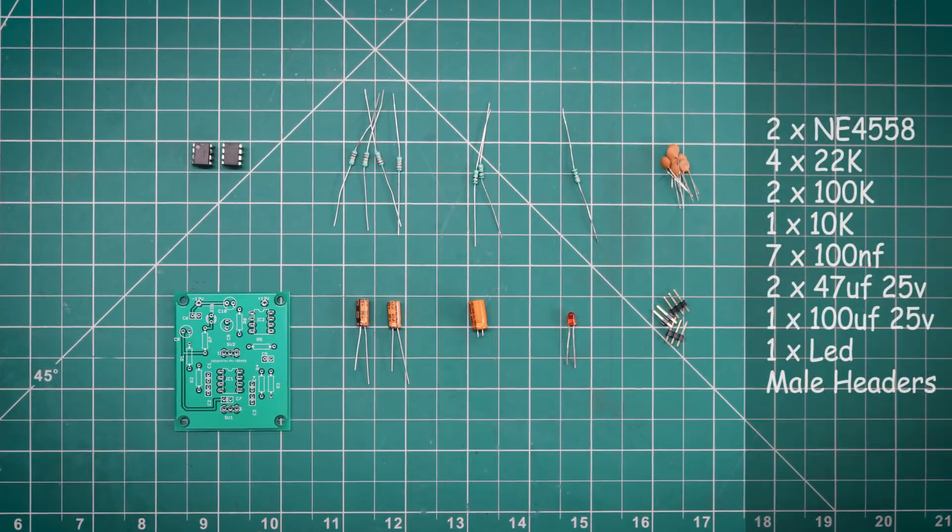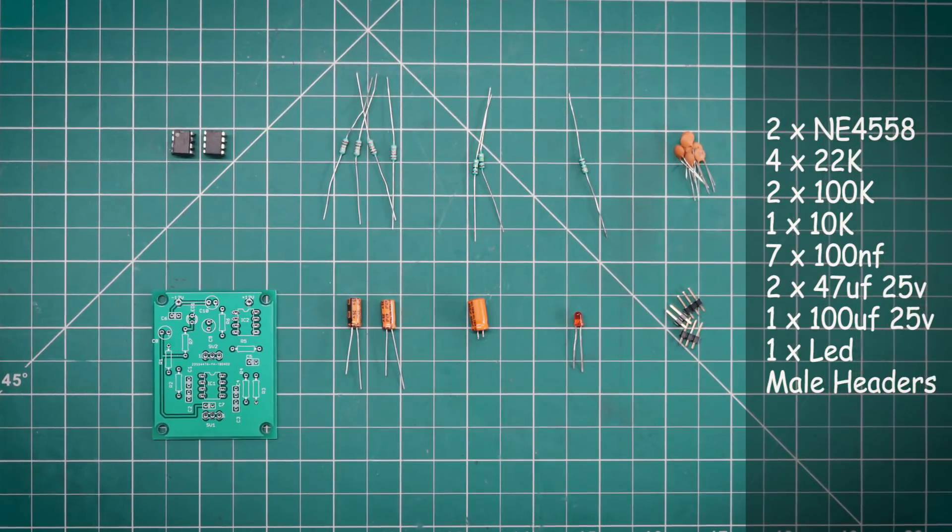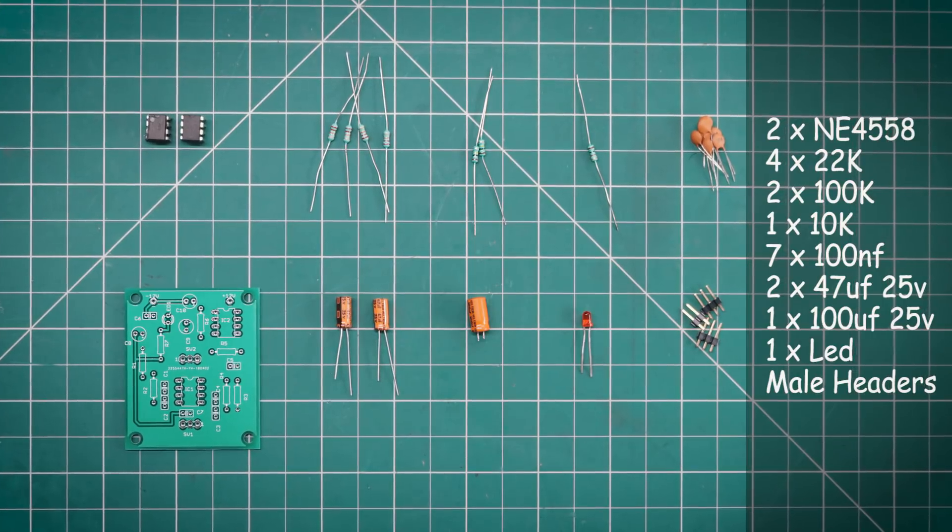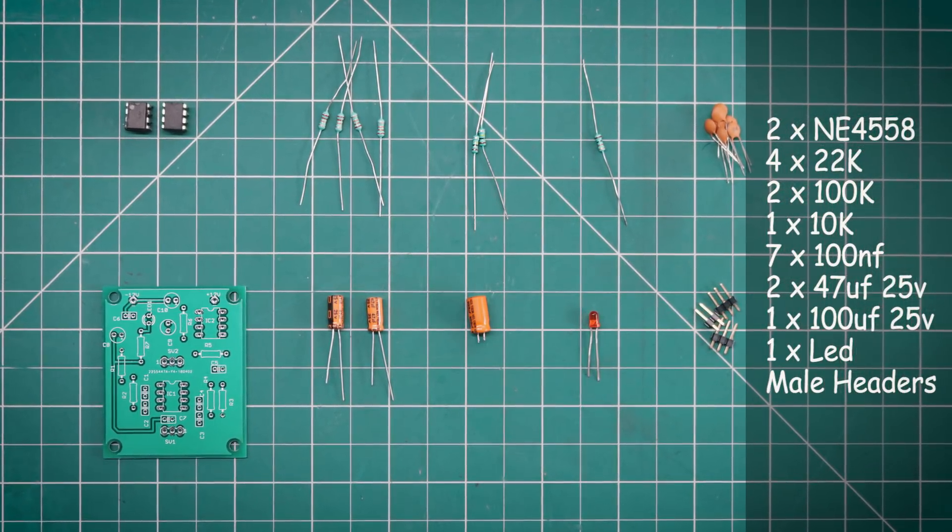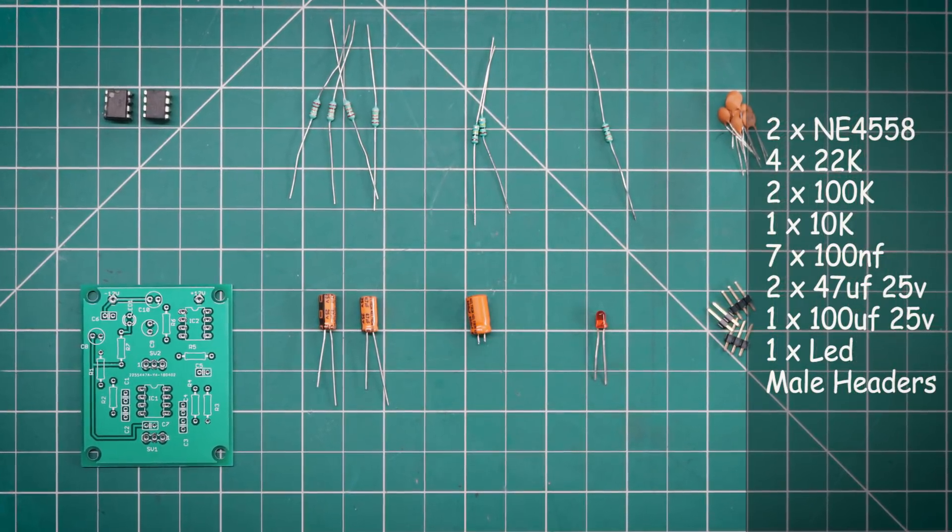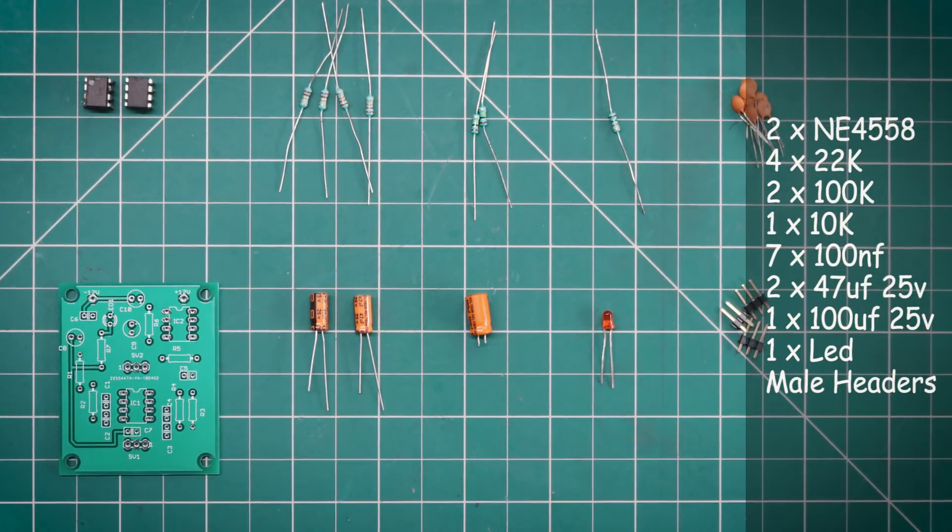For this project, I use 2 NE4558 op-amps, 4 22K resistors, 2 100K resistors, 1 10K resistor, 7 100nF capacitors, 2 47uF 25V capacitors, 1 100uF 25V capacitor, 1 LED and couple of male headers.